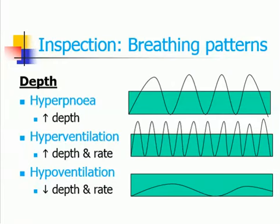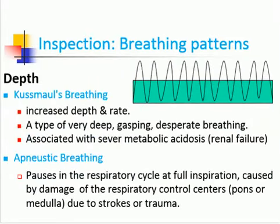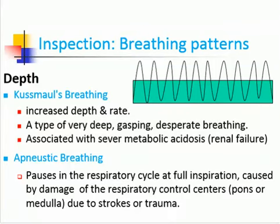Depth of breathing may be assessed as follows. Hyperpnea refers to increased depth. Hyperventilation involves both increased depth and rate. Hypoventilation involves a decrease in depth and rate. Kussmaul breathing is increased in depth and rate — it is a type of very deep, gasping, desperate breathing associated with severe metabolic acidosis or renal failure. Apneustic breathing involves pauses in the respiratory cycle at full inspiration, caused by damage to the respiratory control centers in the pons or medulla due to strokes or trauma.